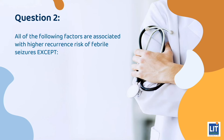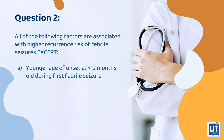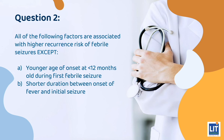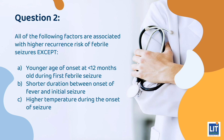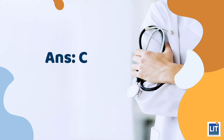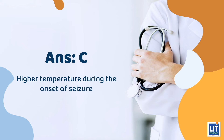Question 2: All the following factors are associated with higher recurrence risk of febrile seizures, except — A. Younger age of onset at less than 12 months old during the first febrile seizure. B. Shorter duration between onset of fever and initial seizure. C. Higher temperature during the onset of seizure. Or D. Positive family history. The answer is C — higher temperature during the onset of seizure.